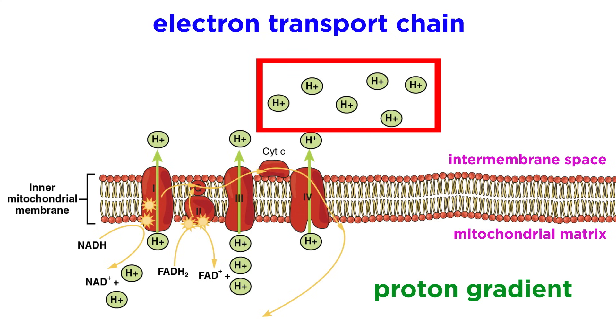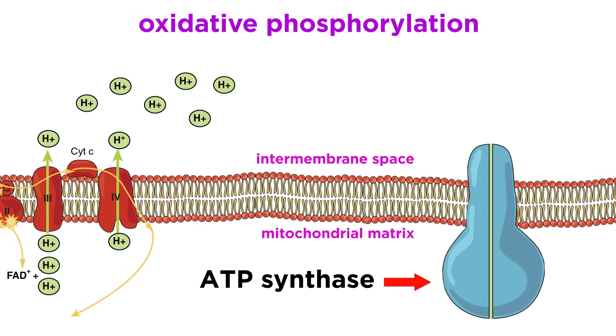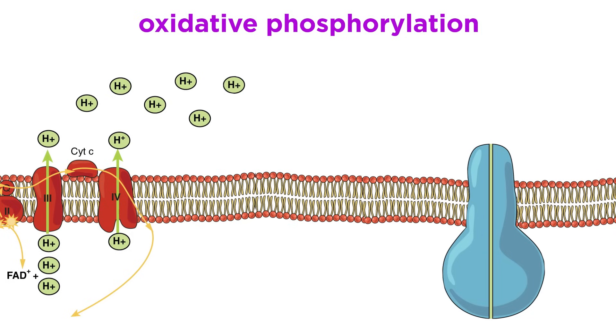which then go to power another protein complex called ATP synthase. As you might guess from the name, this is the component that synthesizes ATP. Because the proton concentration becomes greater in the intermembrane space than inside the mitochondrial matrix, the protons will spontaneously move with the gradient to re-enter the mitochondrial matrix, and the only route available is through ATP synthase.